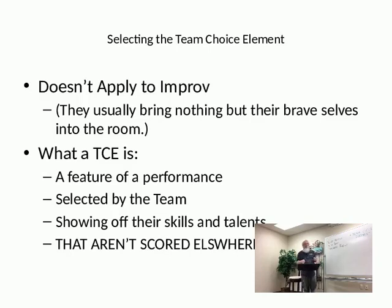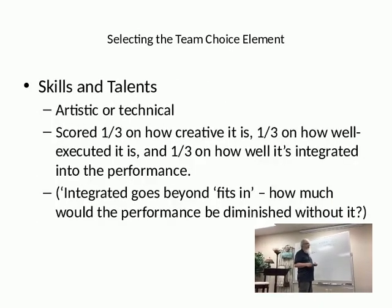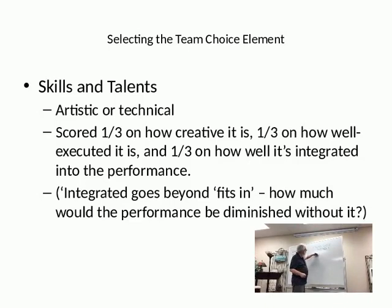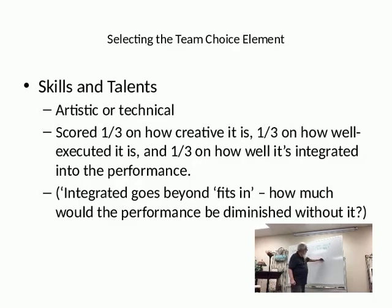Team choice elements are those things that your team does that they want to show off — that they think maybe nobody else has. If you've got someone who can juggle, if you've got someone who can play violin, if you've got someone who can tap dance, any of those kinds of things work out well.